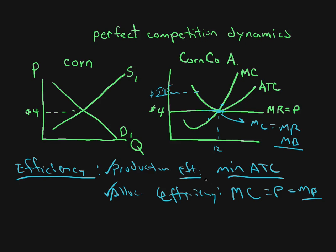One, minimum average total cost—we get production efficiency. Two, marginal revenue equals marginal cost. We get this marginal benefit equals marginal cost.